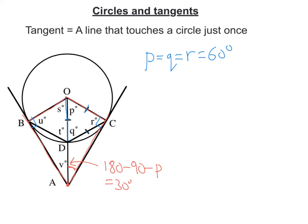By the symmetry of this kite — it's symmetrical along the line OA — V must also be 30 degrees down there. And then, using symmetry again, S must be 60 degrees. And so must T and U. So U, T, and S must also all be 60 degrees.